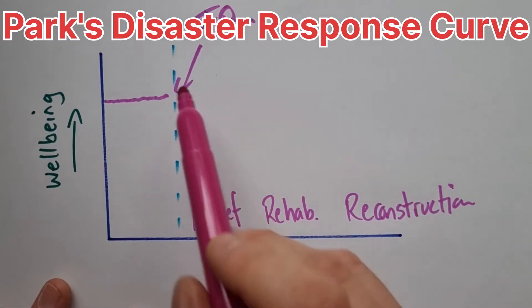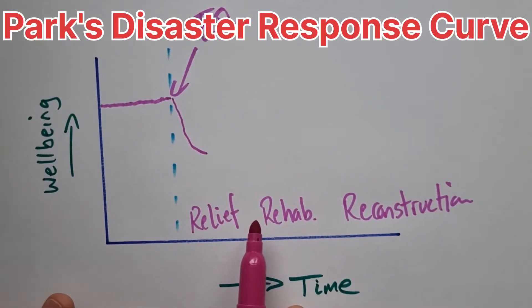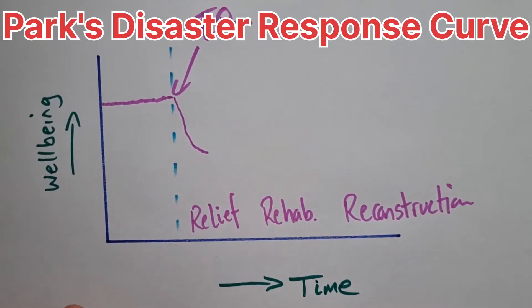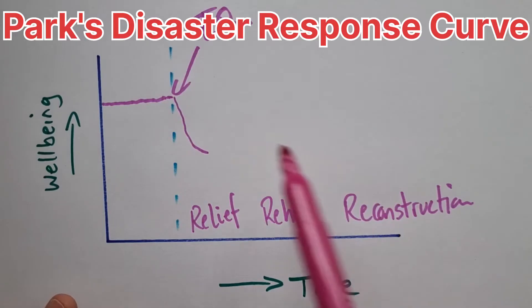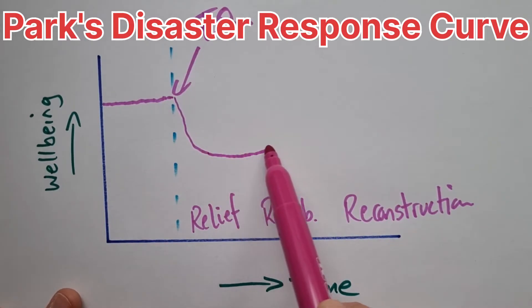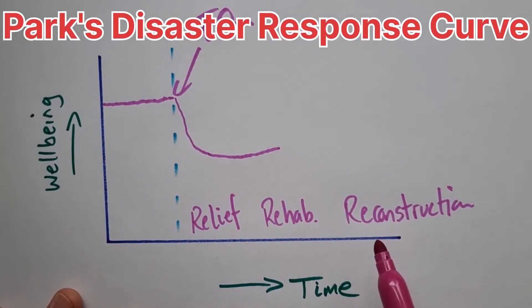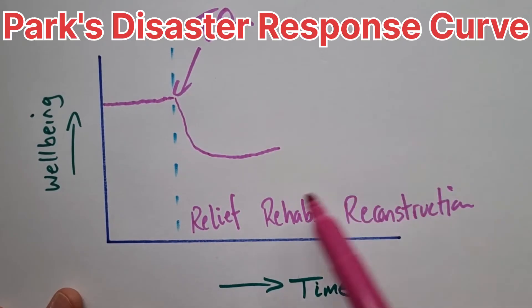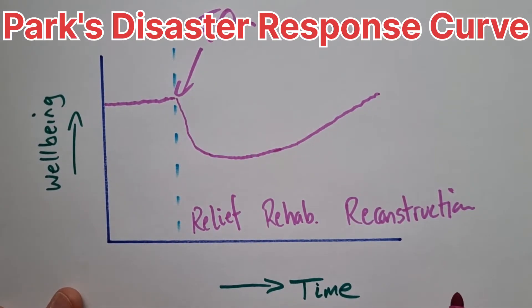We reach what we call the relief phase, and the line comes down. This is where we have search and rescue, which could be in the hours or days after the event. Then we reach rehabilitation, where we have temporary housing and some aid perhaps starts to arrive, and we end up with the line flattening off — that's in the days to weeks afterwards. Then reconstruction happens, rebuilding of society, and that's in the weeks to years afterwards. So the idea is we have this curve that starts to be created.